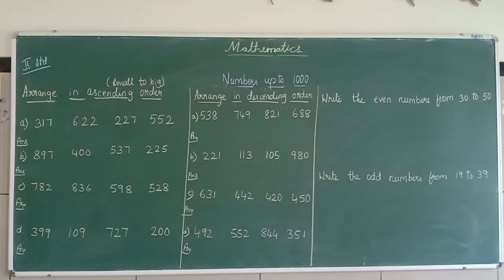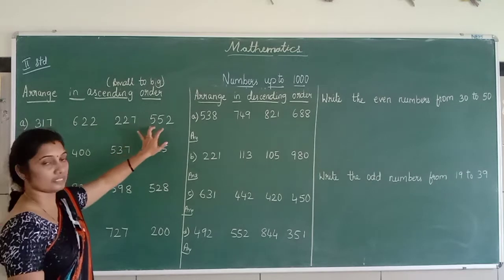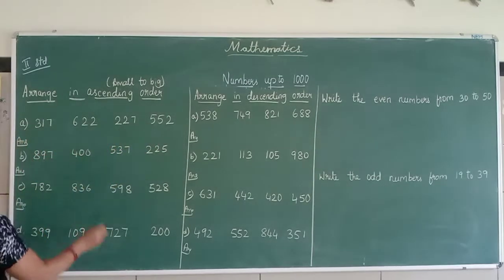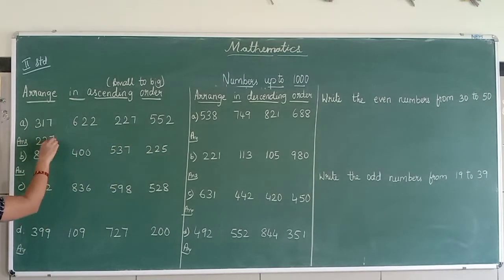Which is the smallest number? 3 is small, 6 is small, 2 is small, 5 is small. So 2 is smaller. So let me write, 227 is the smallest number.